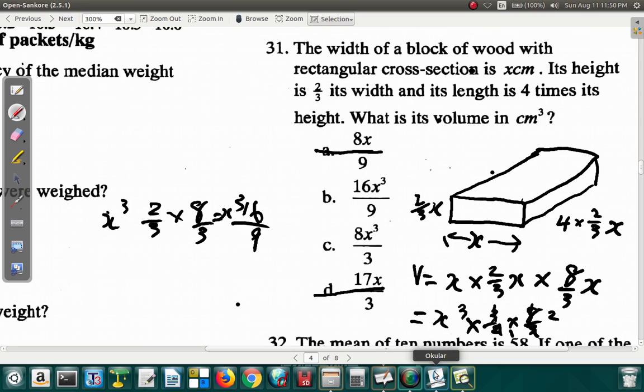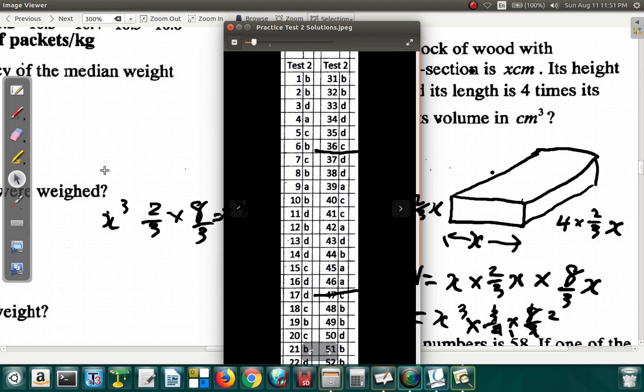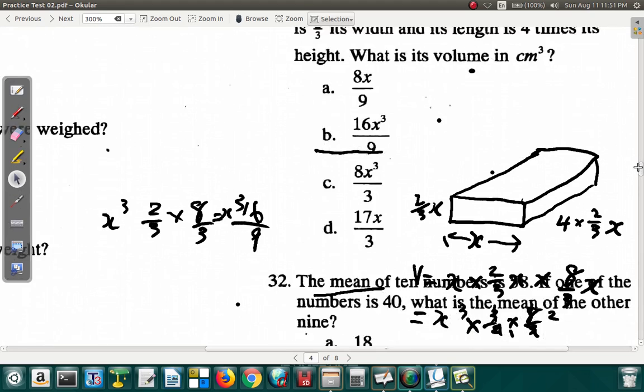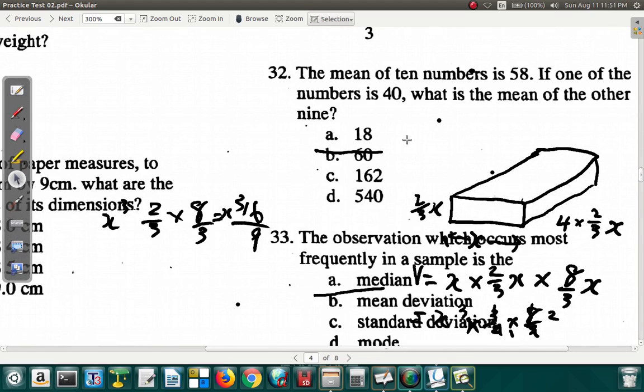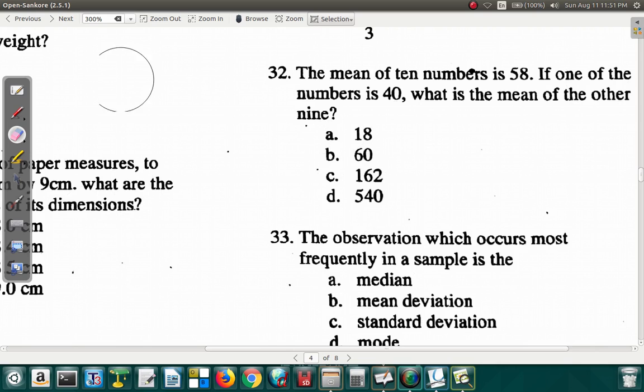That would be the answer for question 31. 31 is b. Now let's look at 32. Let's erase this rough work and look at 32. Question 32 says the mean of 10 numbers is 58. If one of the numbers is 40, what is the mean of the other 9?